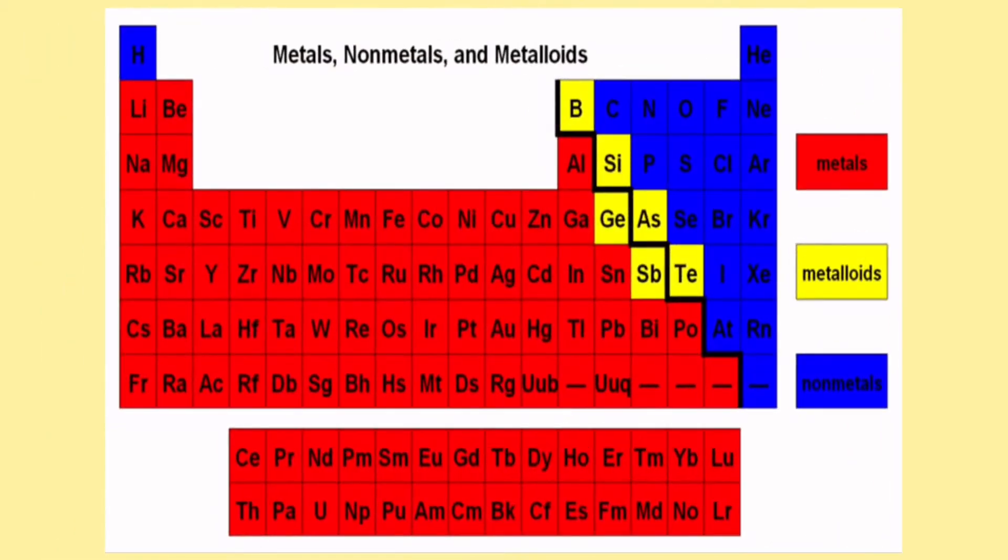The periodic table of elements is ordered by ascending atomic number. The chemical elements are divided into metals, metalloids, and non-metals.